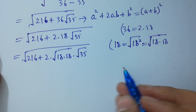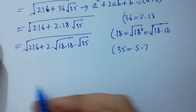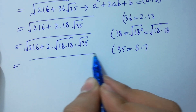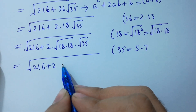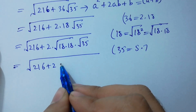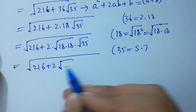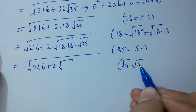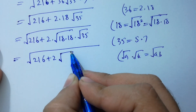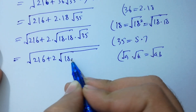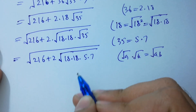So it becomes square root of 216 plus 2 times square root of 18 times square root of 18 times square root of 35. Using the rule square root of a times square root of b equals square root of ab, we get square root of (18 times 18 times 35), and since 35 equals 5 times 7, I hope you understood.